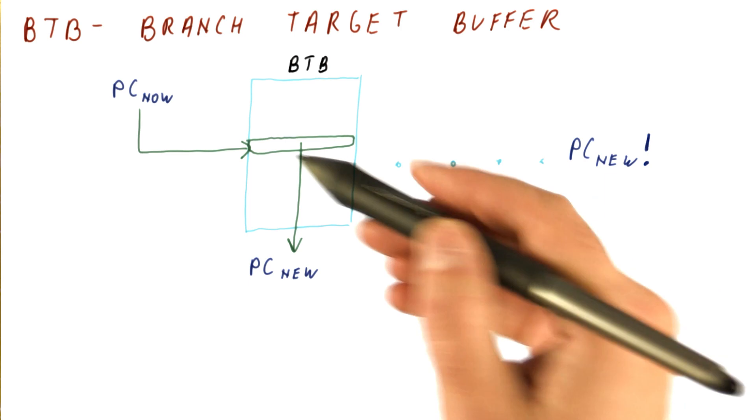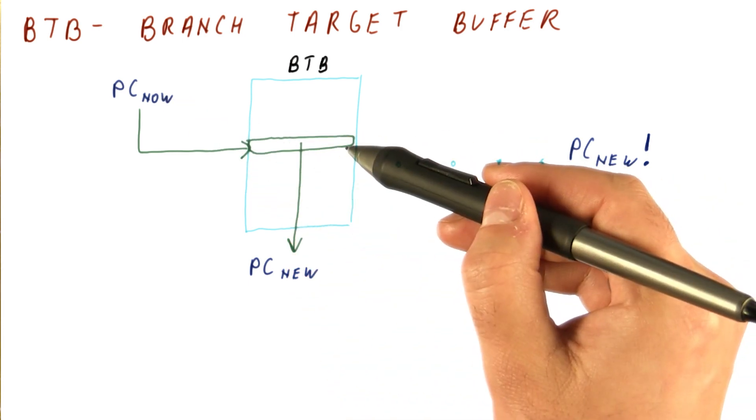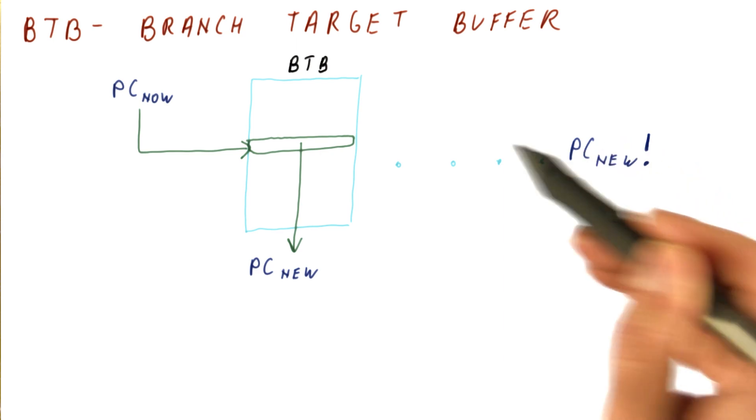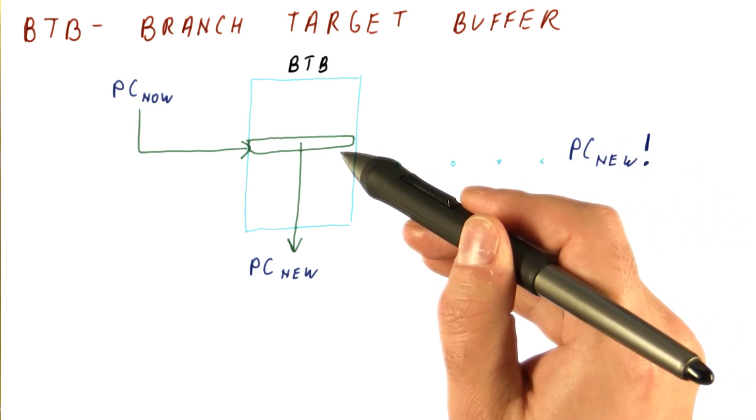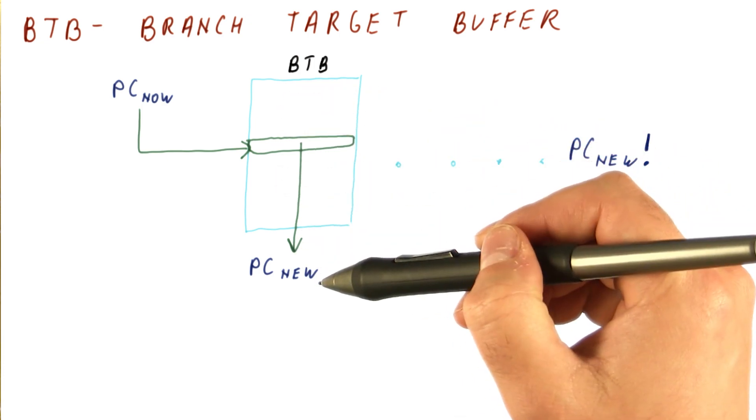And also, we will use the branch's own PC to index again into the BTB and write this new PC that is correct into the table so that next time we see this branch, we get the correct prediction, assuming that it's jumping to the same location.